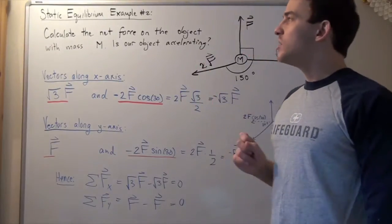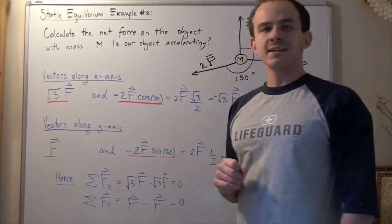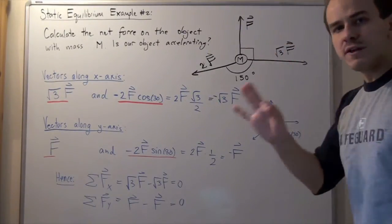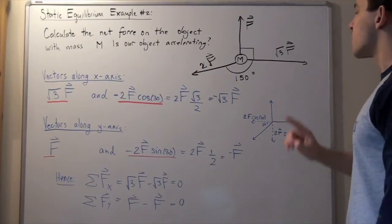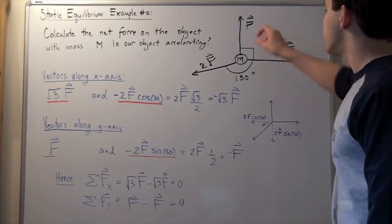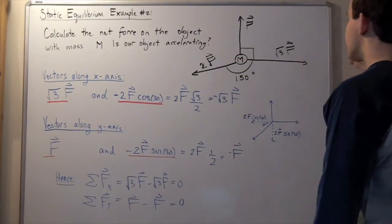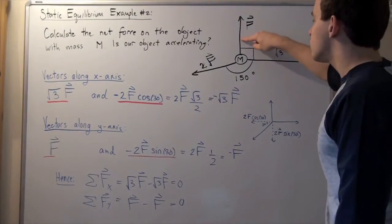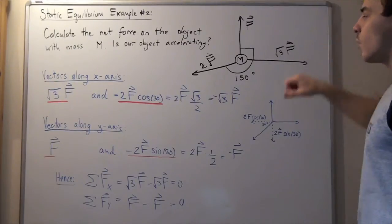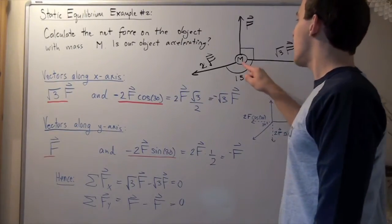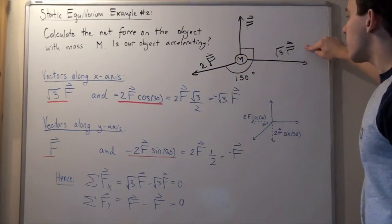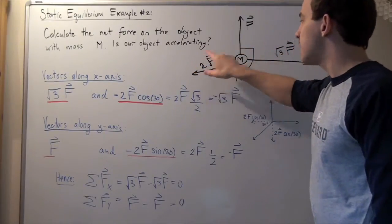In this example, we're going to once more take a look at static equilibrium. We have a mass with three forces acting on it. One force points upward along the y-axis with magnitude F. Another force points along the x-axis at a 90-degree angle to the first with magnitude √3F. A third force pulls object M at an angle of 150° to the x-axis with a magnitude of 2F.